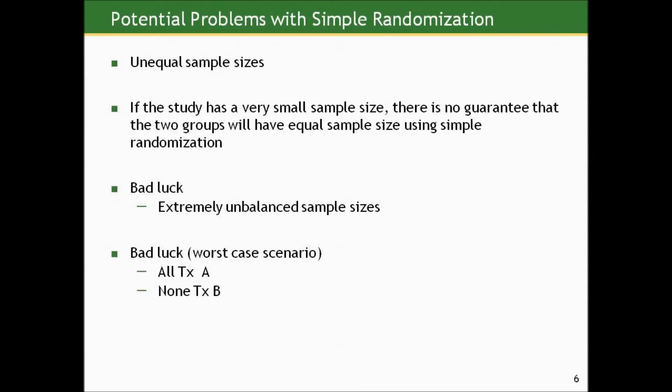So let's talk about unequal sample sizes. If a study has a very small sample size, there's no guarantee that two groups will have equal sample size just flipping a coin. The worst case scenario, you'd have extremely unbalanced. Everybody goes into treatment A, nobody's randomized to treatment B. But think about this. If you had 10 people, even if you flip a fair coin 10 times, it's not that unlikely to get, say, 8 heads and 2 tails, leading to 8 people in one group and 2 in the other, just by chance. So when you have a small number that you start with, it's easy to get imbalanced.